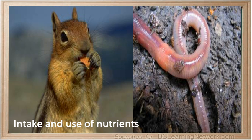All living organisms require the intake and use of nutrients. This occurs in very different ways in different kinds of living things. Humans consume food and water, some plants can consume insects, and most plants get nourishment from the soil.